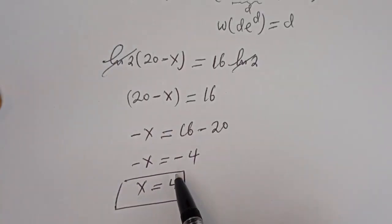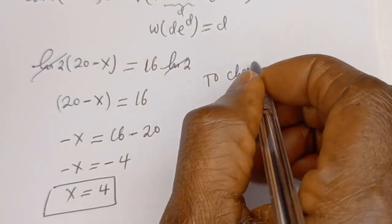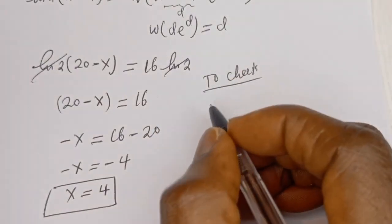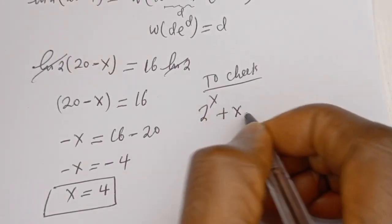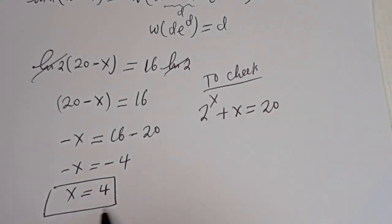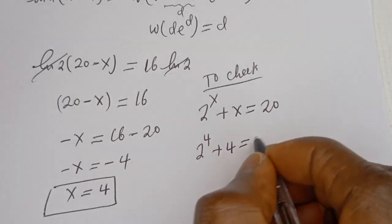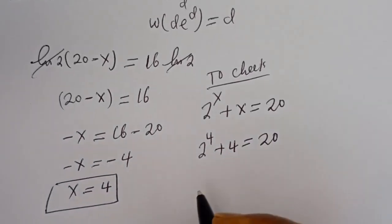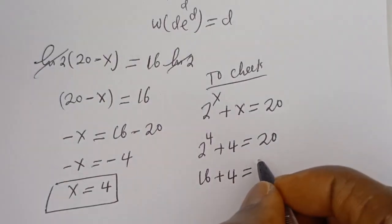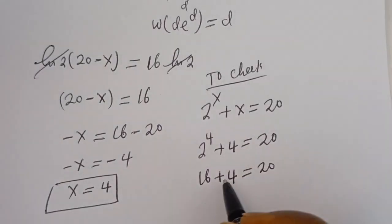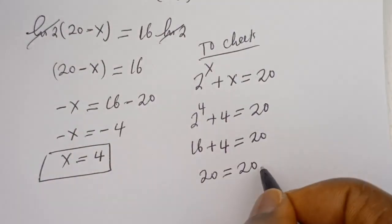Let's check to confirm. We have the given equation: 2 to the power of x plus x is equal to 20. When x is equal to 4, we have 2 to the power of 4 plus 4 is equal to 20. 2 to the power of 4 is 16, and 16 plus 4 is equal to 20, which is true.